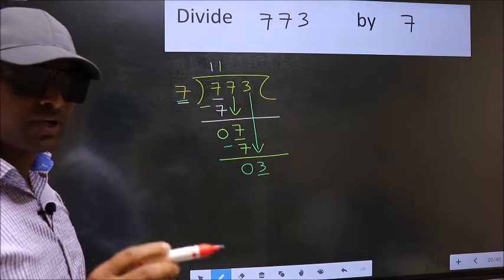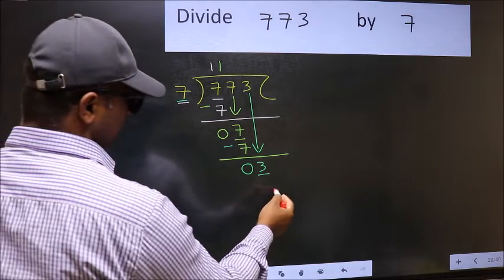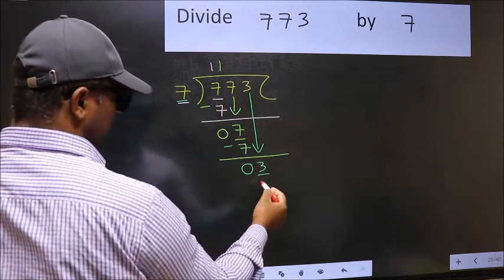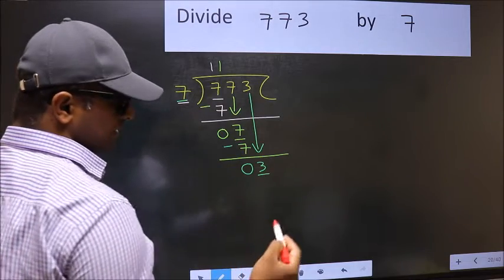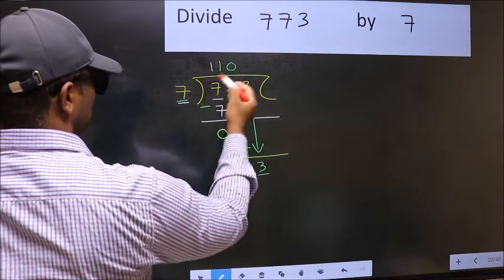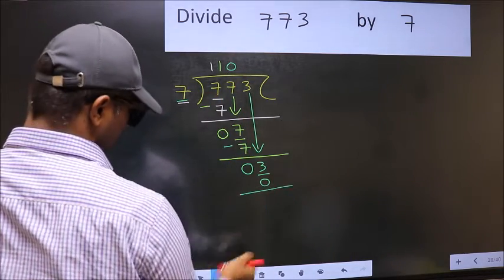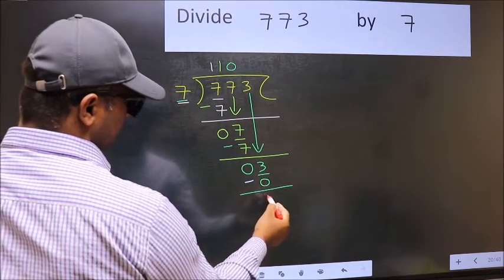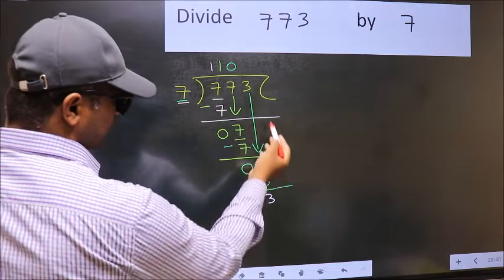Instead what you should think of doing is which number should we write here. If I take 1, we will get 7. But 7 is larger than 3. So what we should do is we should take 0. So 7 into 0, 0. Now you should subtract. 3-0, 3. Over here we did not bring any number down.